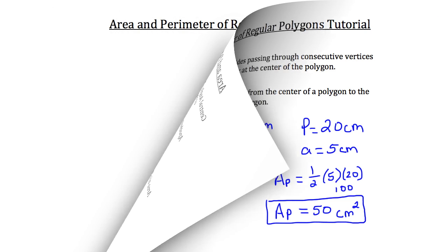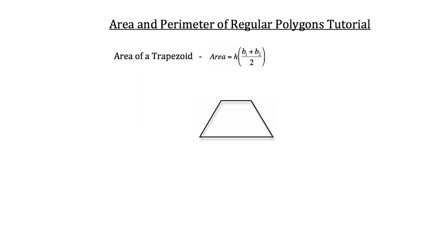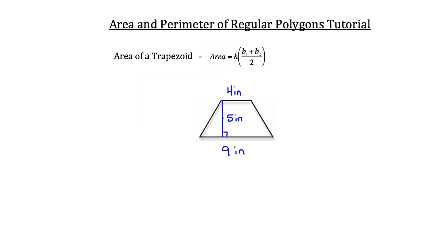Now let's move on to trapezoids. The formula to calculate the area of a trapezoid is equal to the height of the trapezoid — which you can find by drawing a line from the top base down to the bottom base — times the sum of the bases, base one plus base two, divided by two. If the height of this trapezoid was five inches, base one at the top had a length of four inches, and base two at the bottom had a length of nine inches, you could solve for the area.